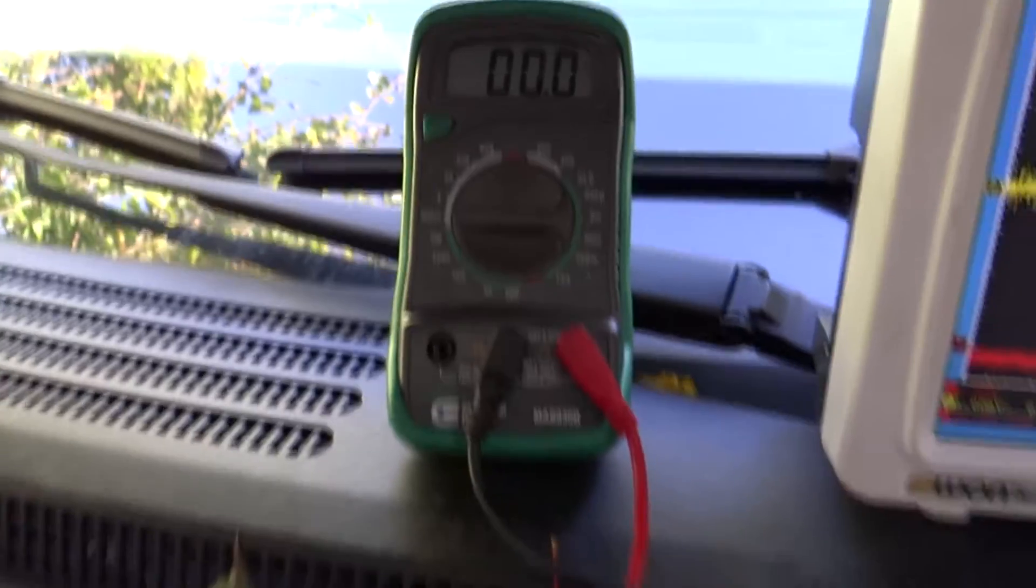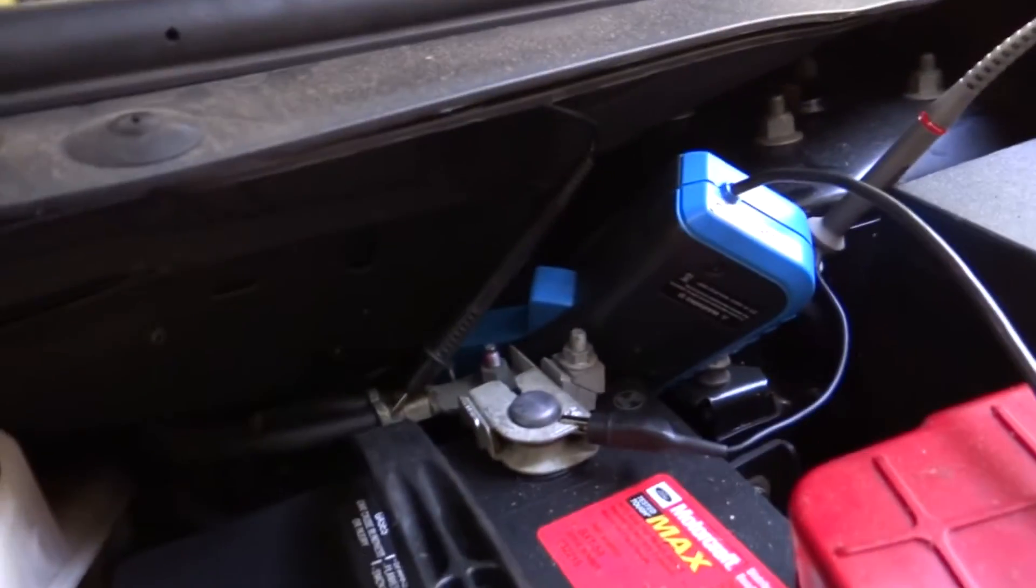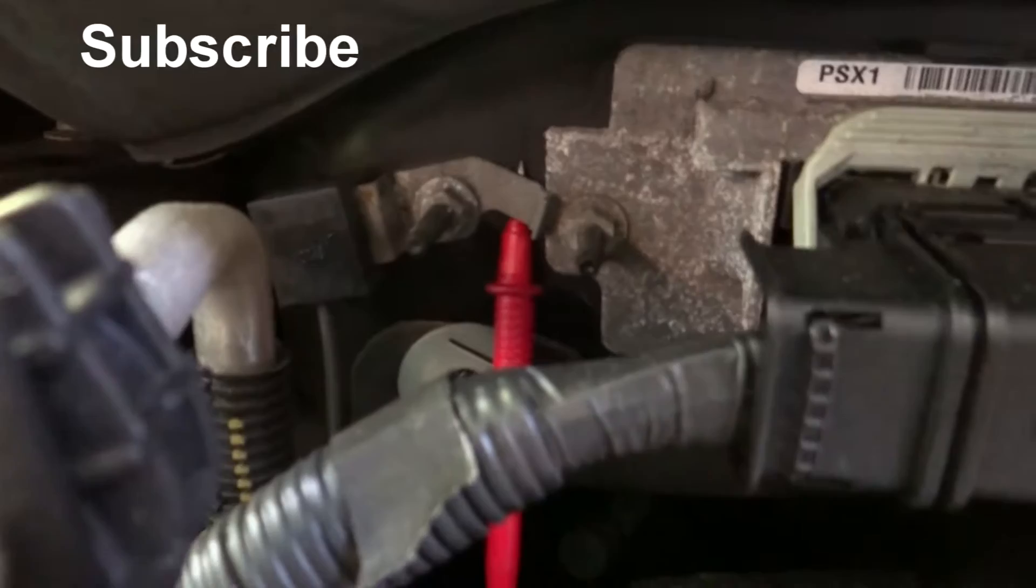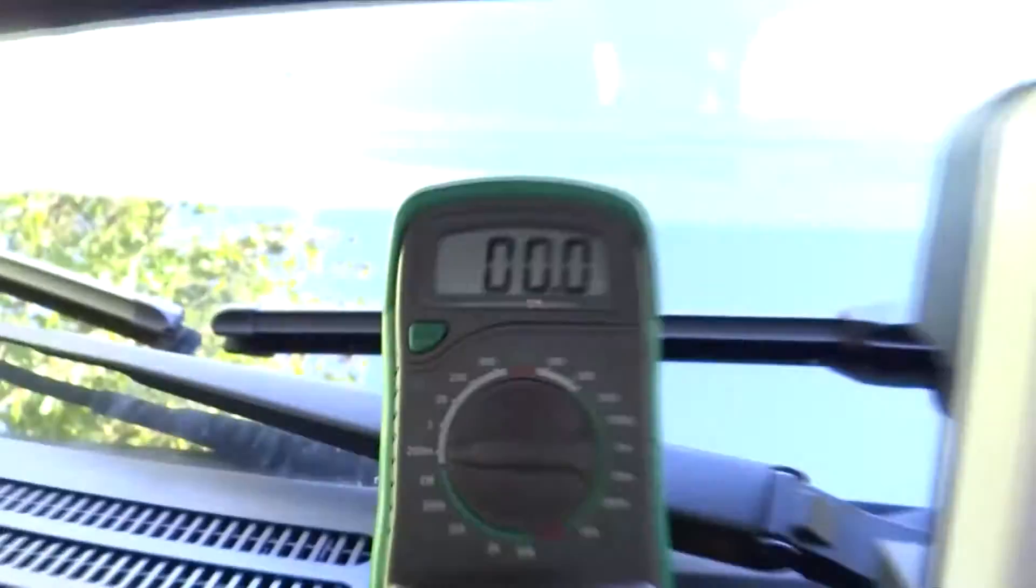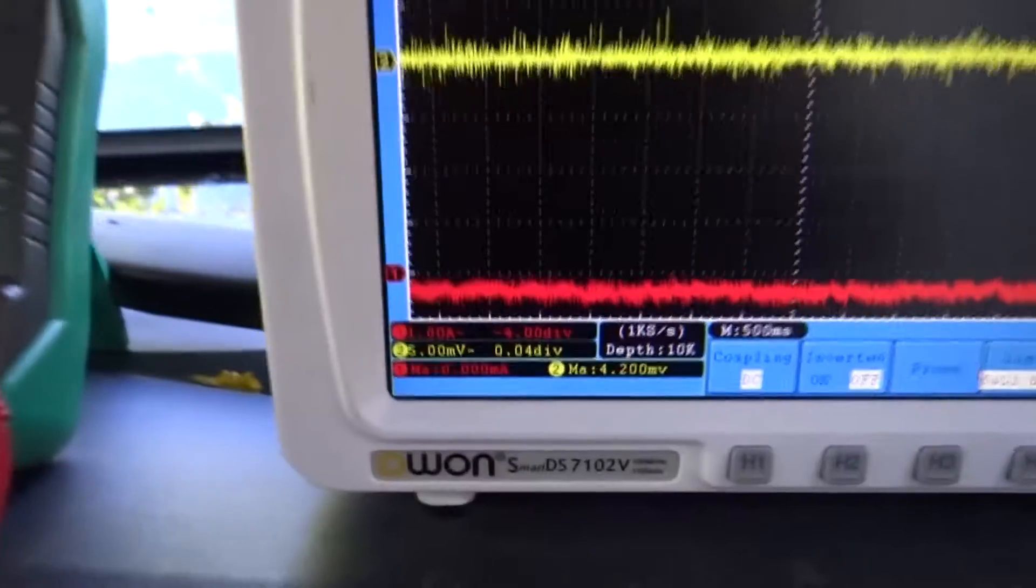So what we have is our setup. This is the voltmeter. We have the black lead connected to the battery negative, and our red lead connected to a body ground over here next to the PCM. We are reading zero millivolts right now and we are set on a 200 millivolt scale.